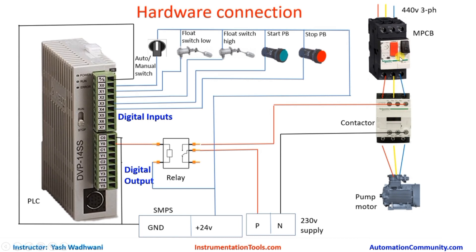Our main output is the pump, but to run the pump we require a starter. This is a DOL starter with an MPCB and contactor. We cannot energize the contactor directly with the PLC, so we have to use a relay. First, we connect the ground of the SMPS to the common of the digital outputs, and digital output Y0 we connect to one terminal of the relay.